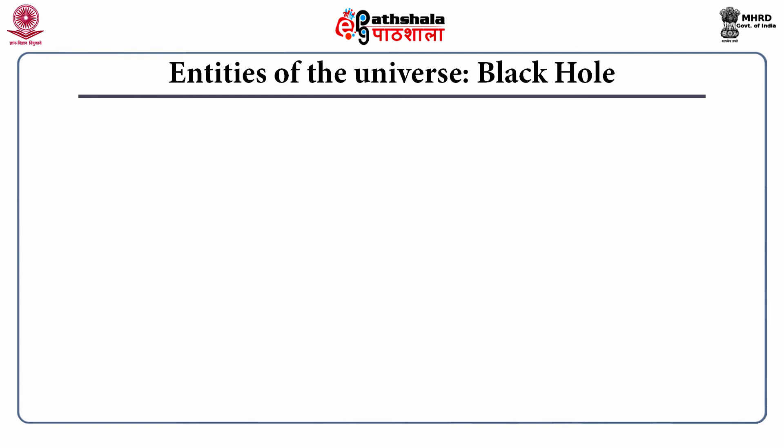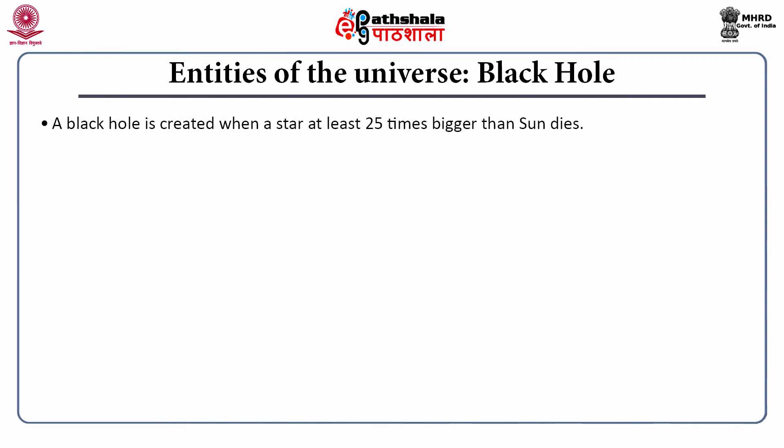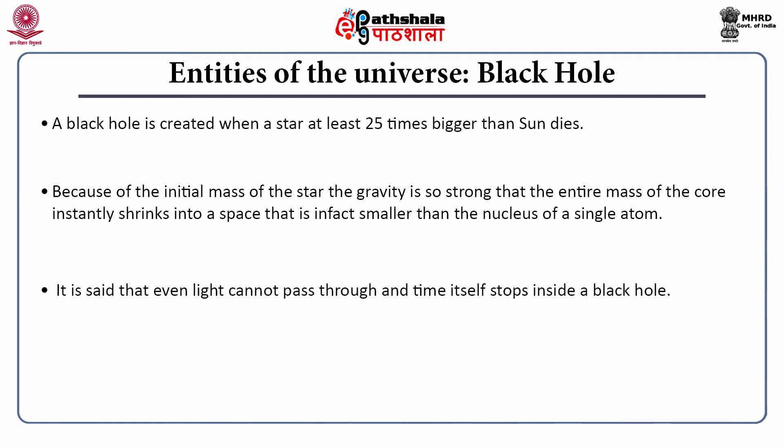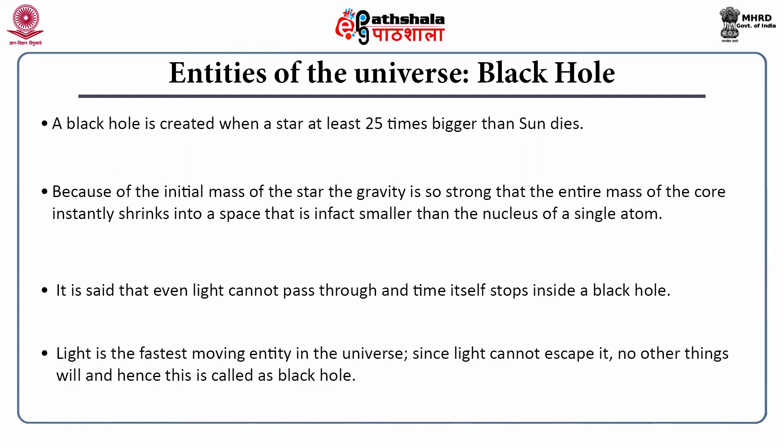Next is the black hole. A black hole is created when a star at least 25 times bigger than the sun dies. Because of the initial mass of the star, gravity is so strong that the entire mass of the core instantly shrinks into a space smaller than the nucleus of a single atom. Even light cannot pass through a black hole. Since light — the fastest-moving entity in the universe — cannot escape it, no other thing can escape either, and that is why it is called a black hole.